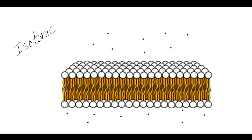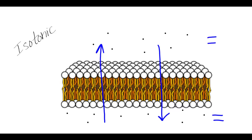In an isotonic solution, solute concentration and solvent concentration are equal. It's tempting to say that no water would move across the cell membrane; however, water is always flowing across the cell membrane. It's just going to flow so that the solvent concentration remains equal — flowing into and out of the cell at the same rate.